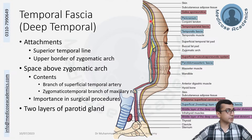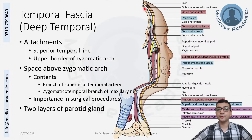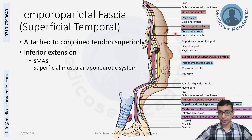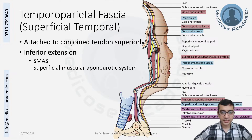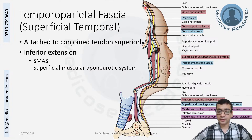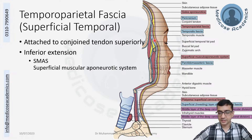Above the zygomatic bone the temporalis fascia attaches to the superior temporal lines, forming the conjoint tendon, and continues upward as the pericranium. Now for the temporal parietal fascia — the superficial temporal fascia shown here in red-brown — superiorly it is attached to the same conjoint tendon at the superior temporal lines. It is called the conjoint tendon because both the deep temporal fascia and the superficial temporal fascia attach there. Above this point it is continuous with the galea aponeurotica, the aponeurosis between the frontal and occipital bellies.